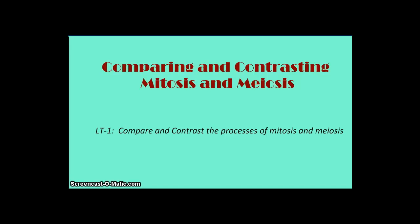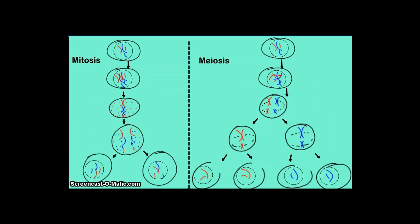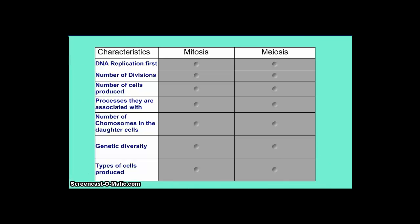Here we have generic diagrams of the processes of mitosis and meiosis. Mitosis is on the left, meiosis is on the right. I also have a more complete diagram — mitosis again on the left, meiosis on the right — and I'll be using these to refer to as I discuss the comparisons.